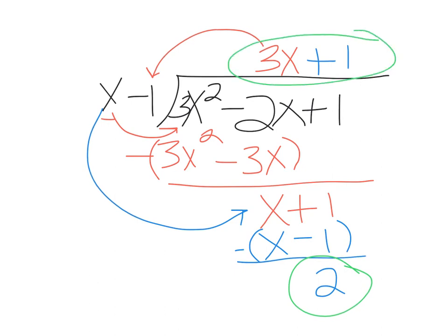And the 3x plus 1 would be the equation of your asymptote.